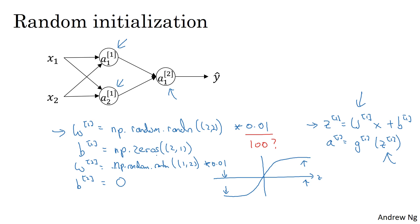So finally, it turns out that sometimes there can be better constants than 0.01. When you're training a neural network with just one hidden layer, this is a relatively shallow neural network without too many hidden layers, setting it to 0.01 would probably work okay. But when you're training a very, very deep neural network, then you might want to pick a different constant than 0.01. And in next week's material, we'll talk a little bit about how and when you might want to choose a different constant than 0.01. But either way, it will usually end up being a relatively small number.